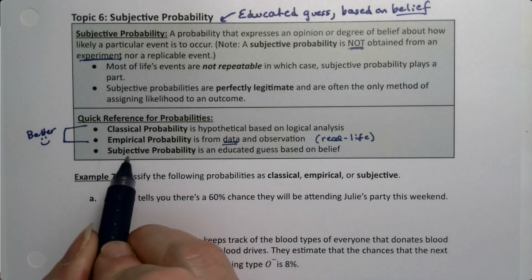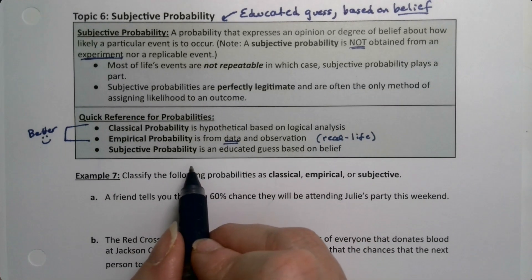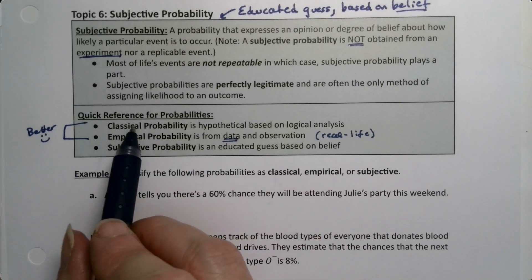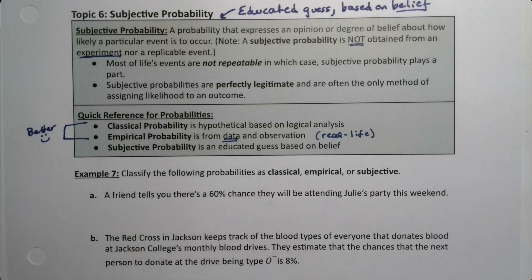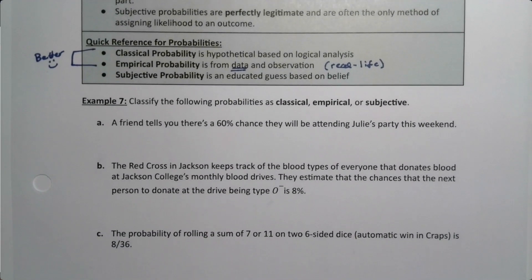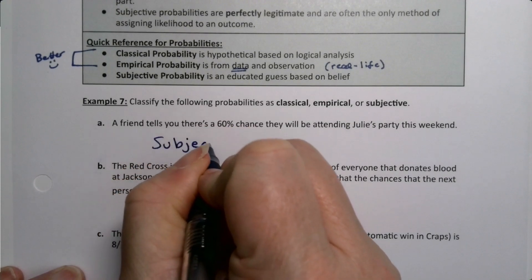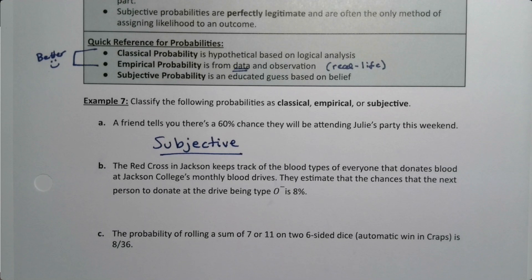But subjective probability is a judgment call. And a lot of times, that's all you've got. You don't have the data. You don't have a logical analysis available to you. And if you don't have data and you don't have logical analysis, then you're going to have to do it based on what you think. So let's look at some examples. Classify the following probabilities as classical, empirical, or subjective. So a friend tells you there's a 60% chance they will be attending Julie's party this week. You say, are you going to attend? No, it's a 60% chance. That's a subjective probability. That is totally an educated guess. Completely. And it's fine. I mean, you just don't have data, nor do you have classical probability.